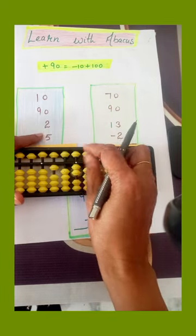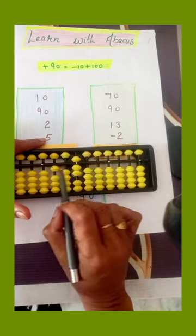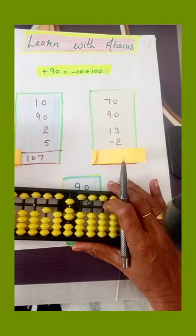Now add 2 on the ones row, 5 on the ones row. Now read the answer: 1, 0, 7. Let's check. Yes, we are correct.